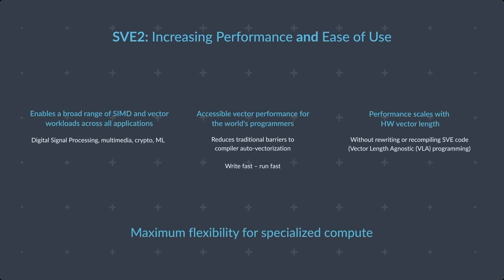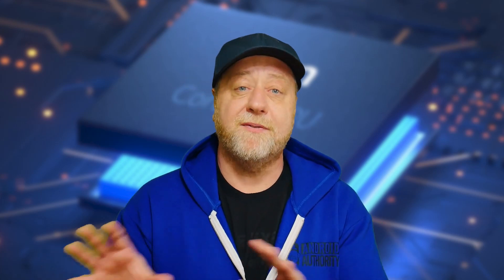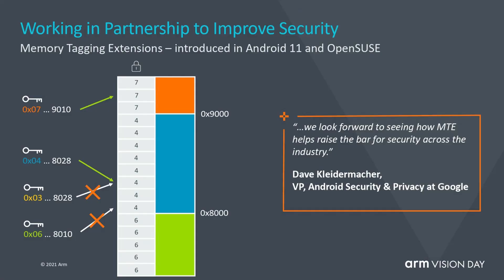Bringing SVE2 down to the level that everything can use it, from 5G devices right up to a supercomputer. They're also concentrating heavily on security, because we've all had big security problems over the last few years with Heartbleed, Spectre, and all these other bugs. And those issues, when we've tried to address them, have caused performance problems. So ARM are saying that in V9, they're going to bring in some hardware features to combat these problems, including memory tagging, something already introduced in Android 11.